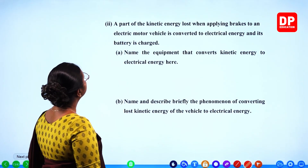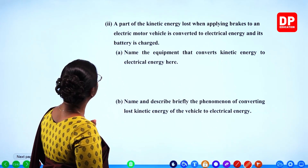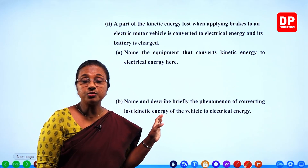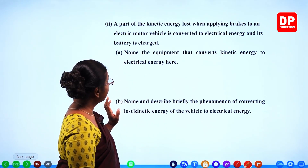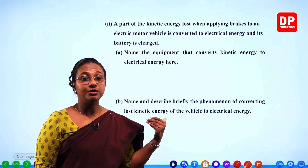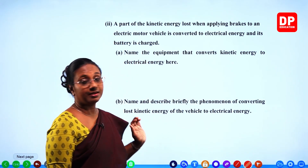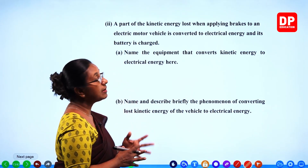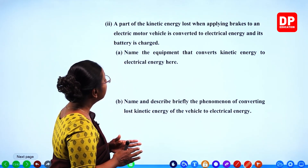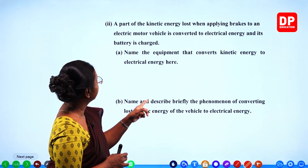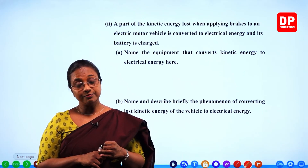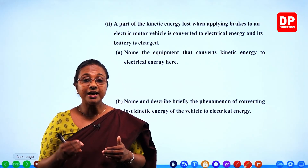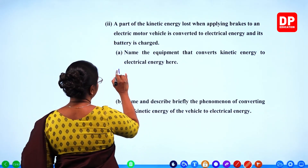Part 2: a part of the kinetic energy lost when applying brakes to an electric motor vehicle is converted to electrical energy and the battery is charged. How is that possible? Name the equipment that converts kinetic energy to electrical energy. A dynamo converts kinetic energy to electrical energy. Under electromagnetic induction, we have discussed the function of a dynamo. Another equipment is the electric generator, and also the alternator. You can write any one: dynamo, electric generator, or alternator.